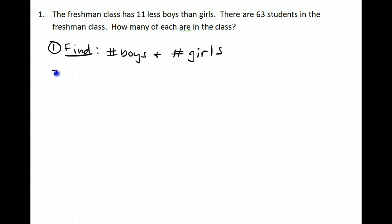Okay, number two, that's our let statement. We need to decide what we're going to start with, and we always start with what we know the least about. I know something about the number of boys - there's eleven less than the number of girls. I don't know anything about the number of girls, so I'm going to let x equal the number of girls.